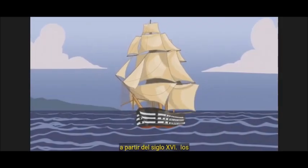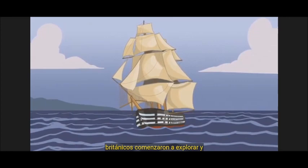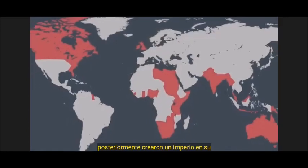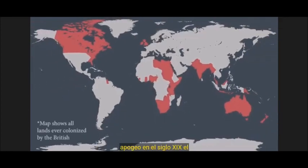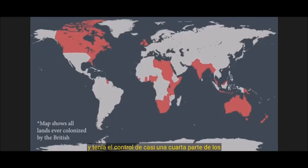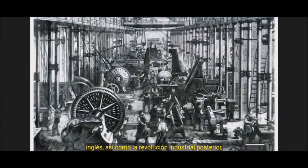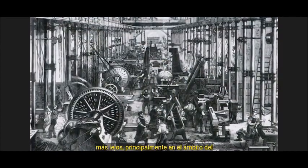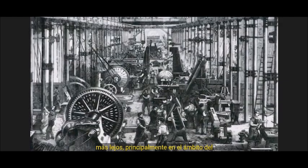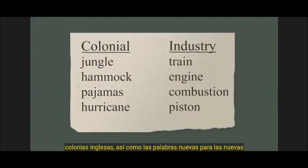Beginning in the 16th century, the British started exploring and subsequently created an empire. At its height in the 19th century, the British Empire covered a quarter of the earth and had control over almost a quarter of the earth's inhabitants. This spread of English, as well as the later industrial revolution, transformed English even further, mostly in the realm of vocabulary. New words from English colonies, as well as new words for new technology, ballooned the English vocabulary into what it is today.